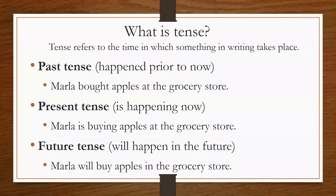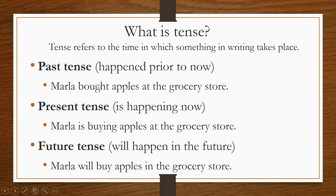Tense refers to the time in which something in writing is taking place. We have three focal tenses — past, present, and future. Past tense refers to things that have happened prior to now. For example: 'Marla bought apples at the grocery store.' 'Bought' indicates past tense — we know it happened before now.